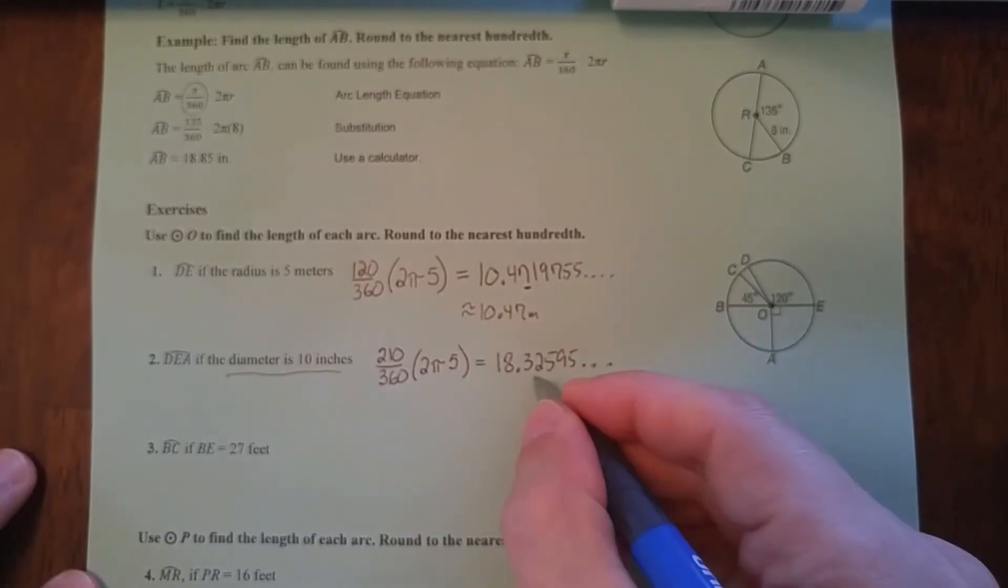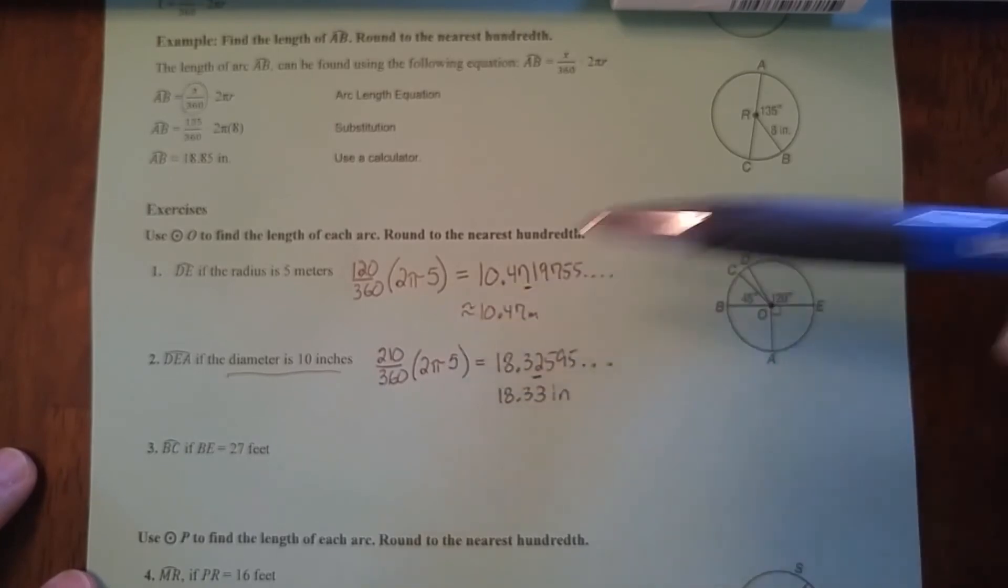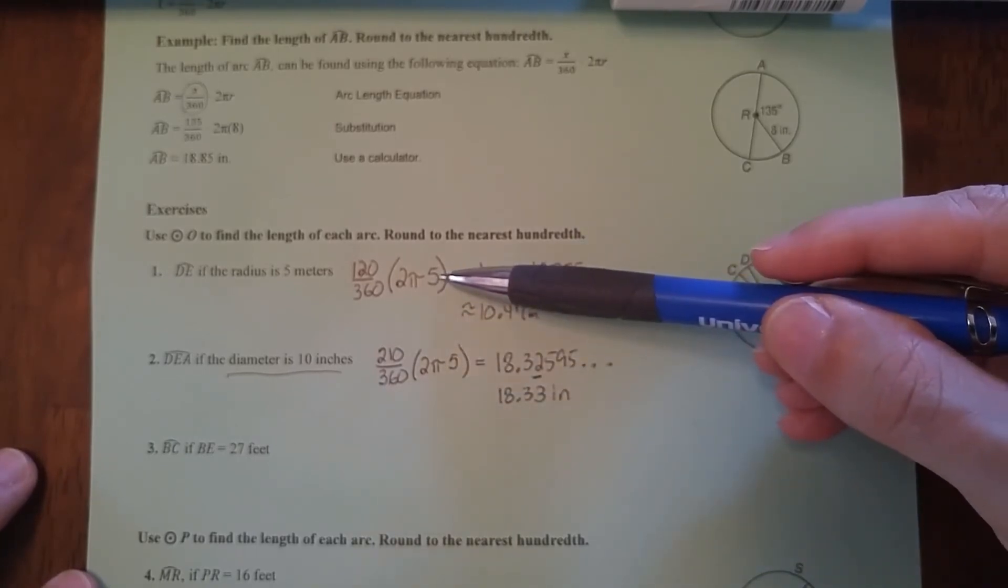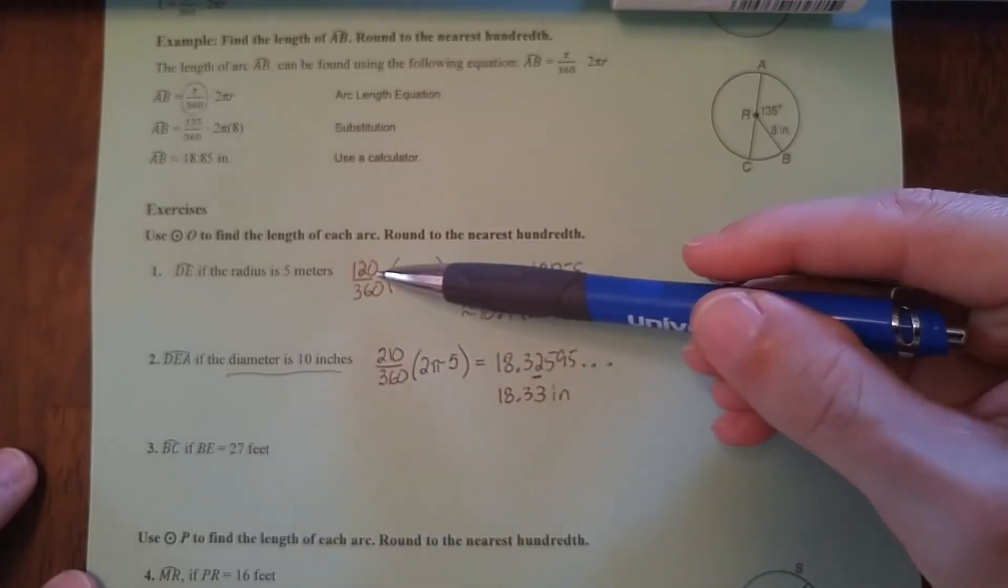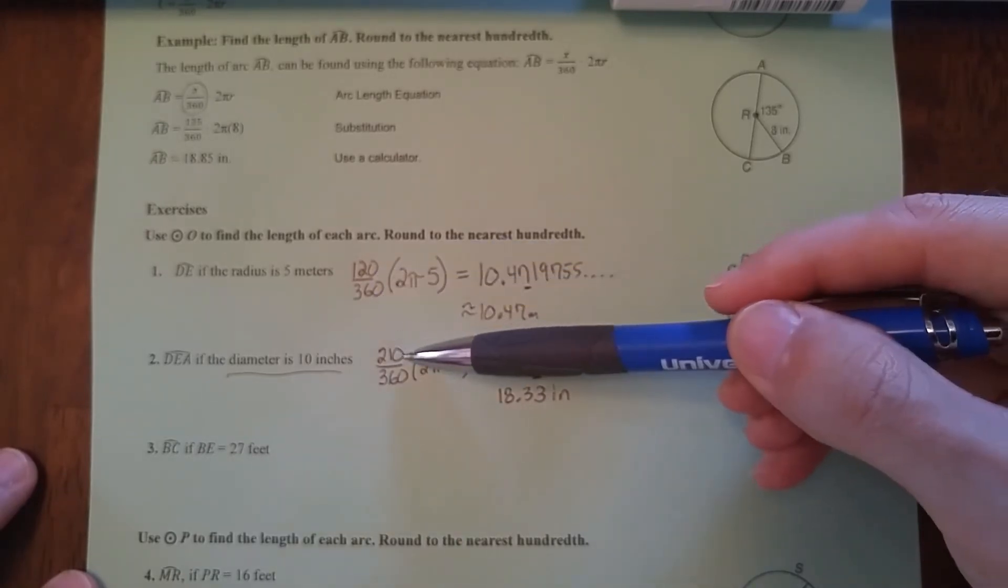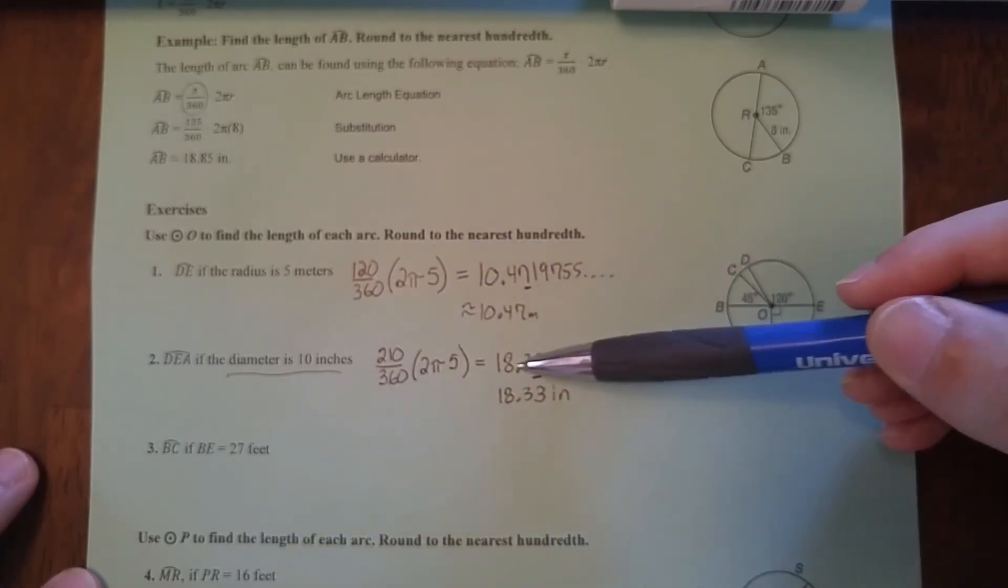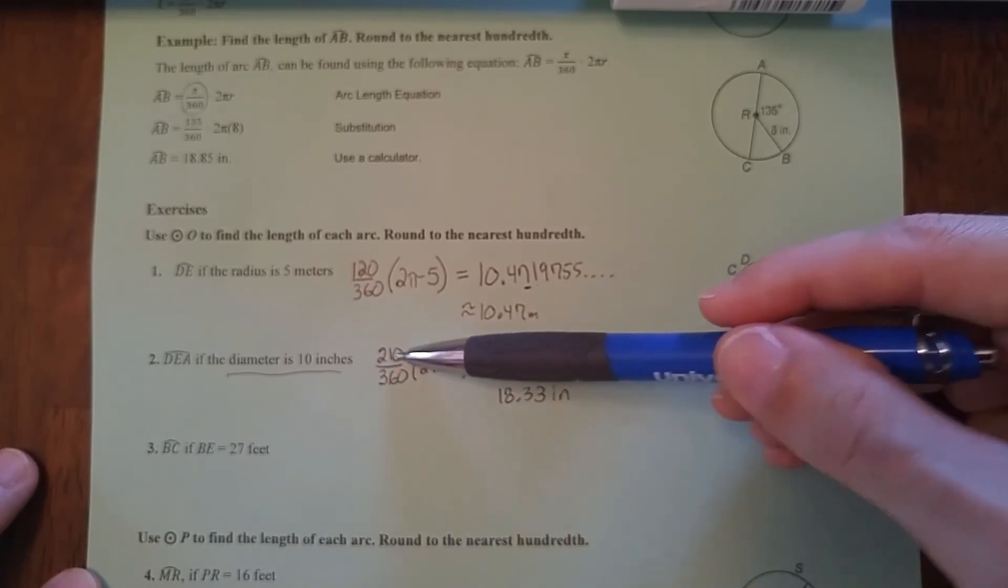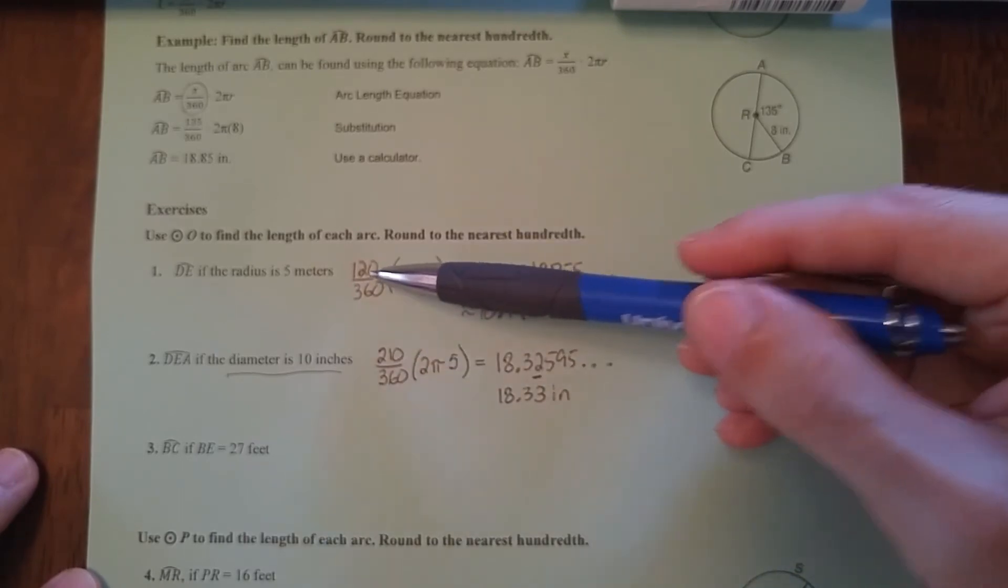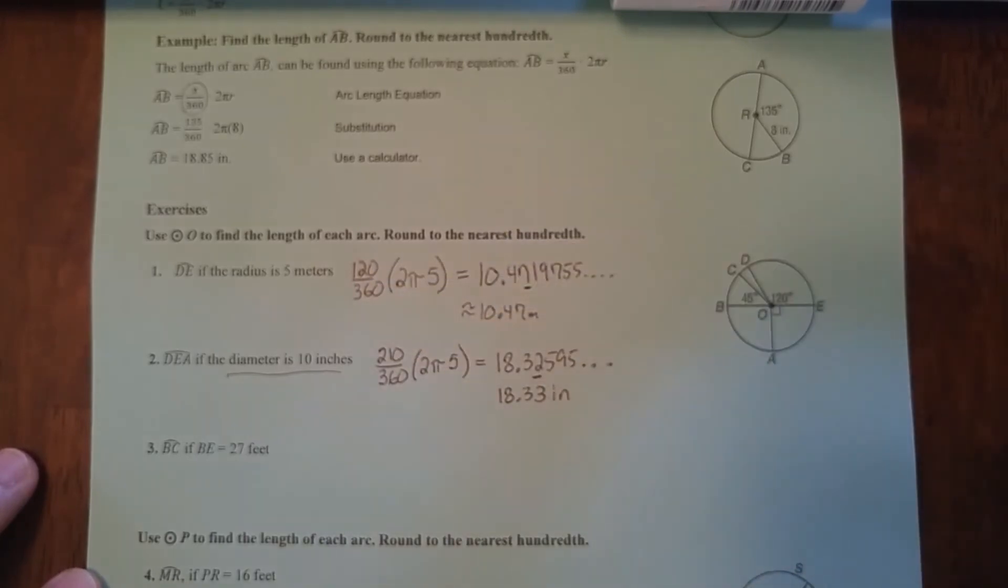So we do this and we get that rounded to the nearest hundredth. Look to the right. Since that's five or more, this is going to be 18.33 inches. By the way, looking at these two answers, we have a circle with a radius of five here and five here. Here we have a smaller portion of the circle. Here we have a larger portion of the circle. And notice that this answer is larger. Larger portion of the same circle, larger answer. Smaller portion of the same circle, smaller answer.